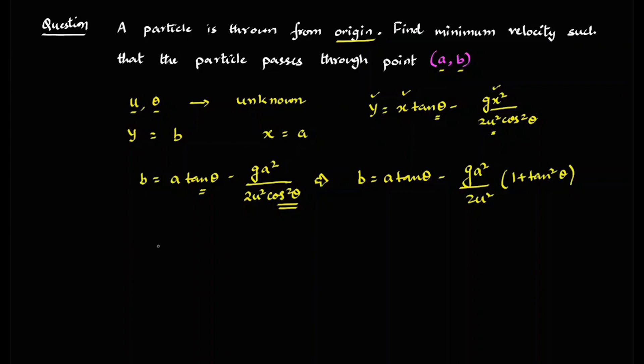So now I will have this equation as G A square upon 2U square. And this is the beauty of this problem because it will actually help you solve this problem in a very, very easier way.